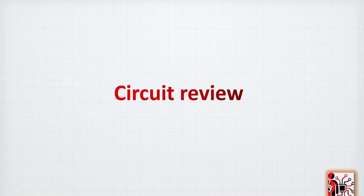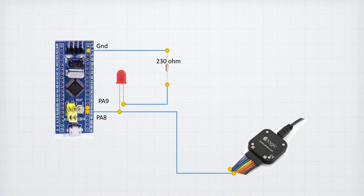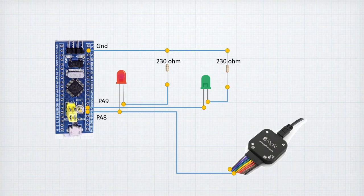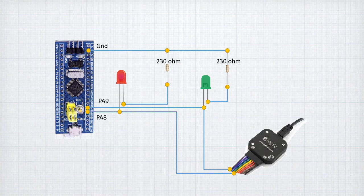Now let's have a quick circuit review. We take the same circuit from the previous tutorial and add a green LED on pin PA9, connecting it through a 230-ohm resistor. We'll program PA9 in a different way, and connect the LED's positive pin to our logic analyzer so we can visualize what's going on in the system.